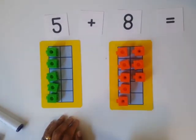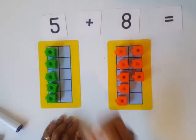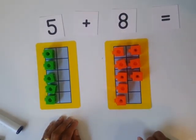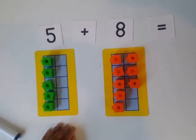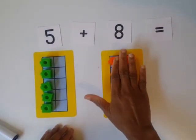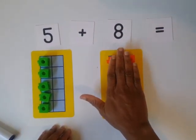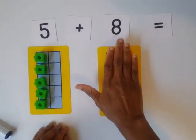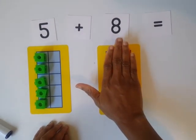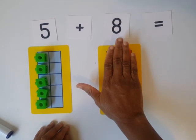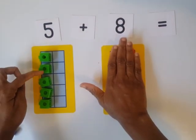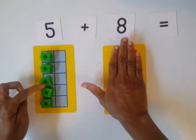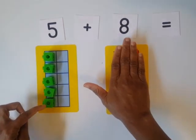Those two numbers — which one is bigger? Eight — we know it's bigger than 5. So if we want to use the counting on strategy, we keep 8 in our heads. We know this is 8 and we count on from 8. So from 8 what is the next number? It's 9. So that means: 8, 9, 10, 11, 12, 13. So that gives us 13.